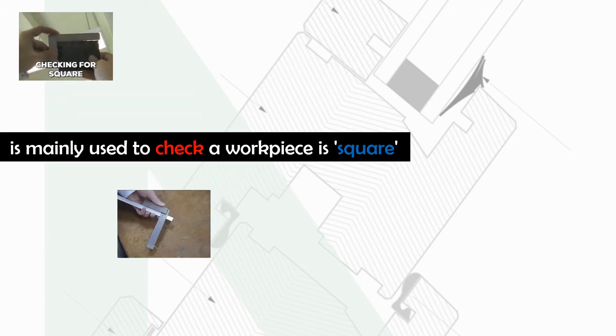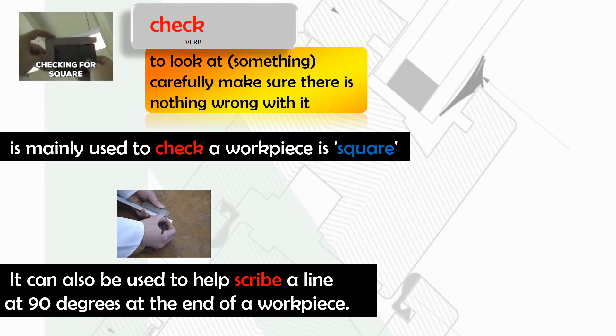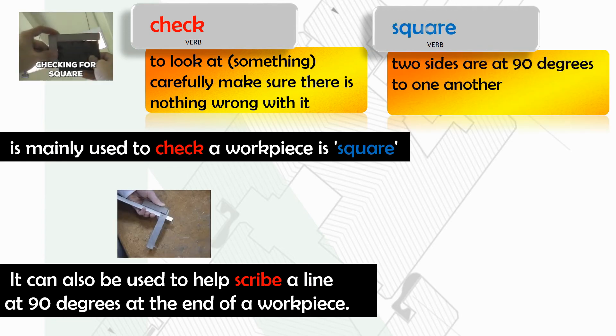A square. A square we use mainly to check a workpiece is square. It can also be used to help scribe a line at 90 degrees at the end of a workpiece. To check something means to look at something carefully to make sure there is nothing wrong with it. Square means that the two sides are at 90 degrees.